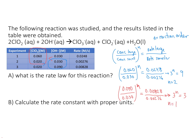So the rate law for this reaction is: rate equals the rate constant times the concentration of chlorine dioxide squared times the concentration of hydroxide to the first, because we found a second-order relationship with respect to chlorine dioxide and a first-order relationship with respect to hydroxide.